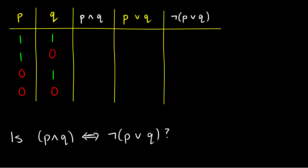So let's do the truth tables. First, P∧Q. When is P∧Q true? P∧Q is true only when P is true and Q is true. So it's going to be true in the first row and false in all of the rest.